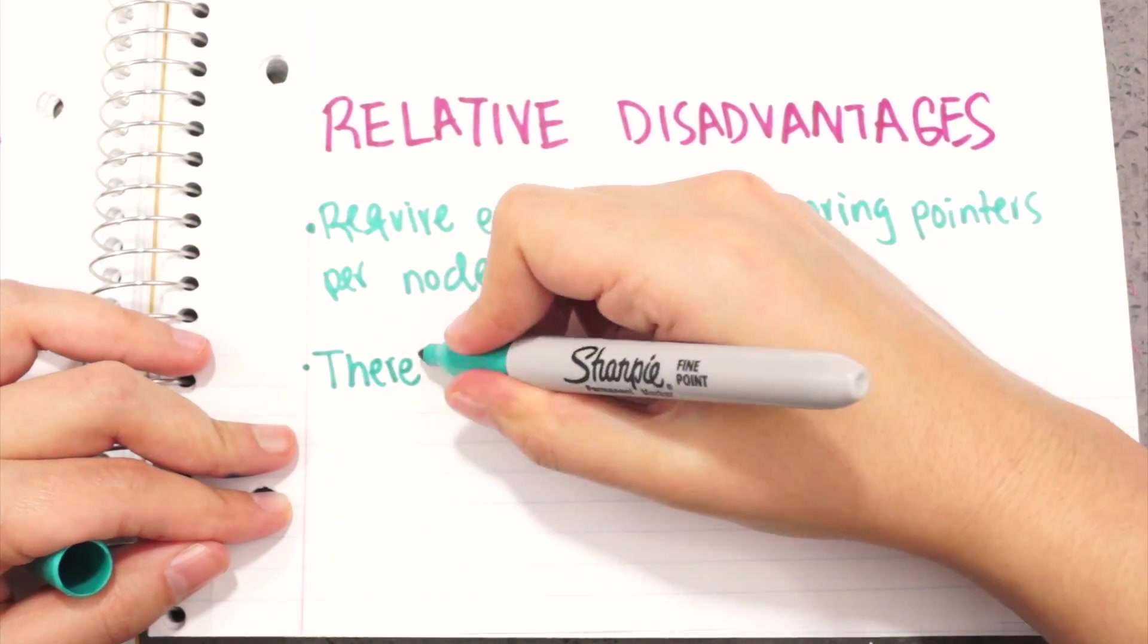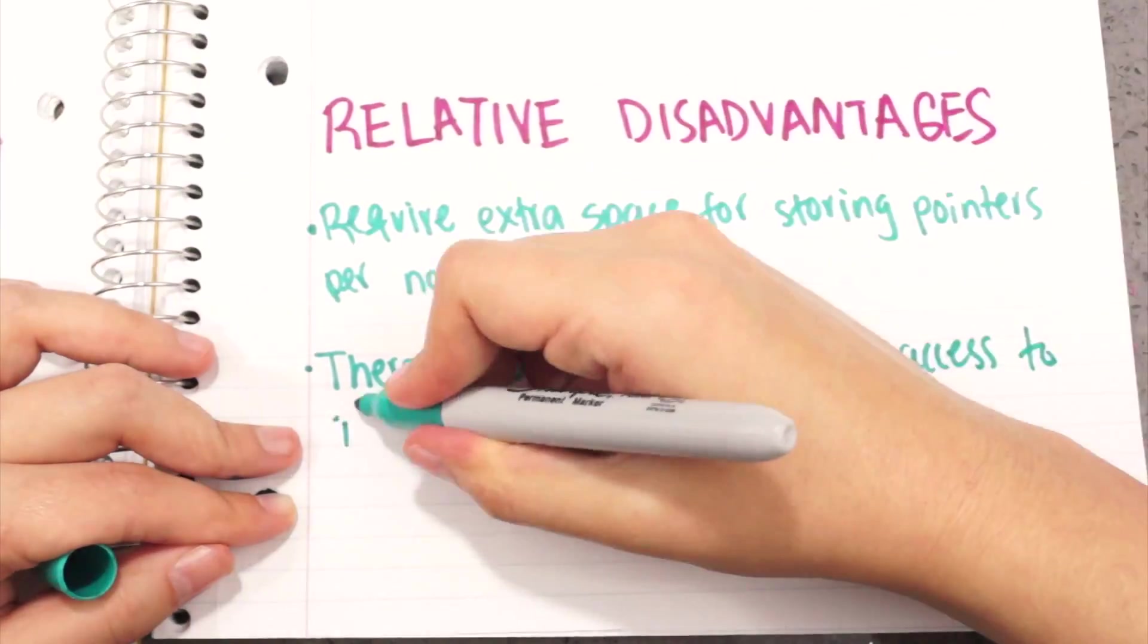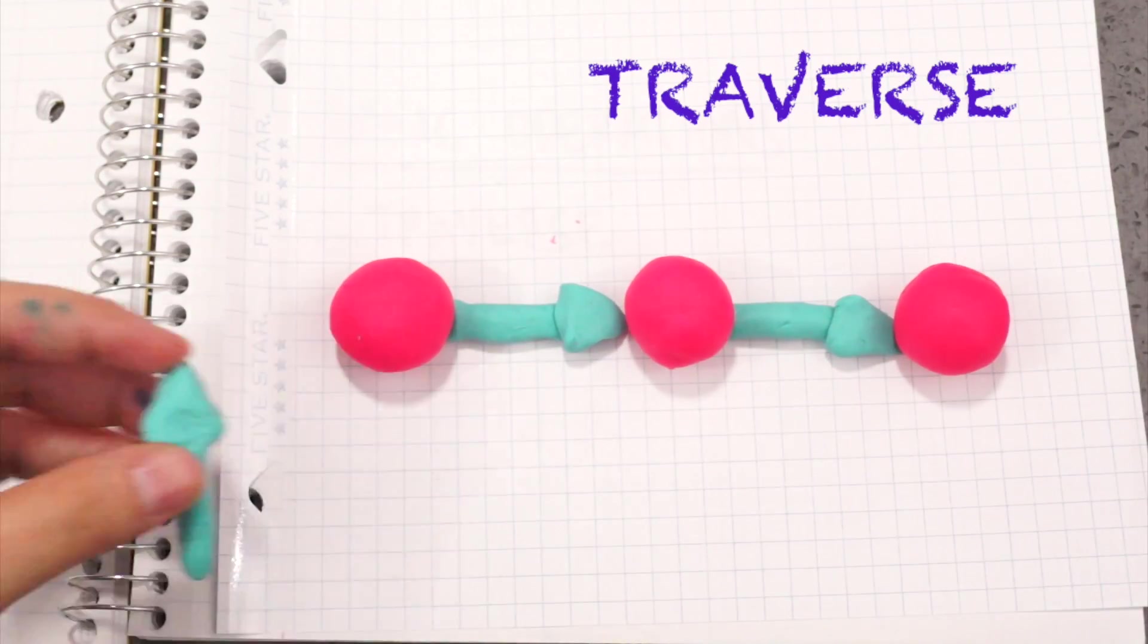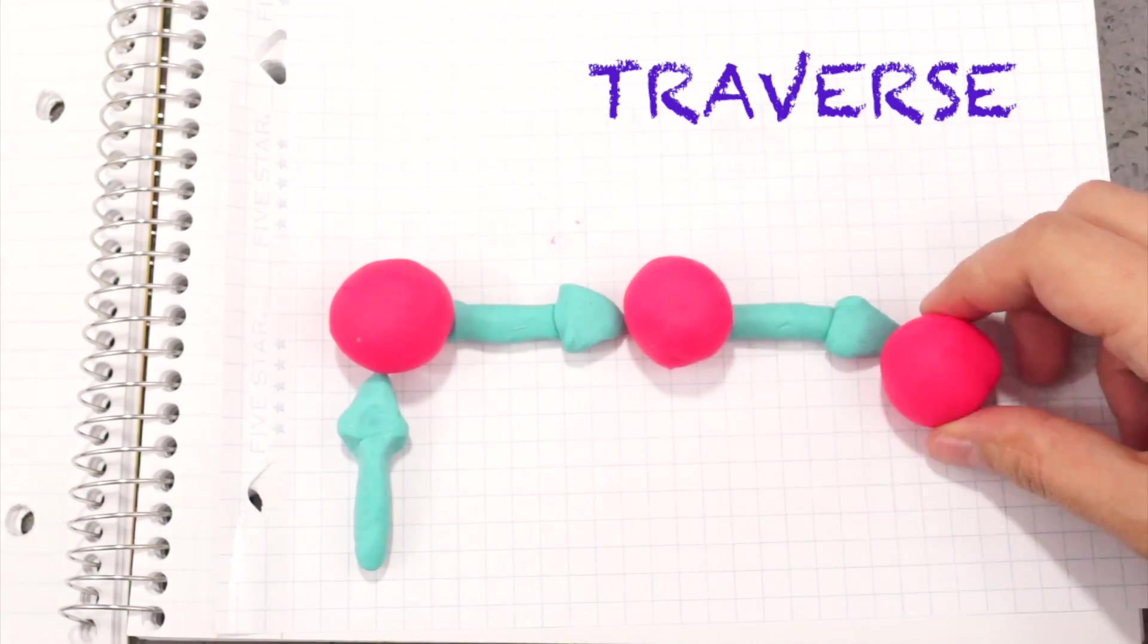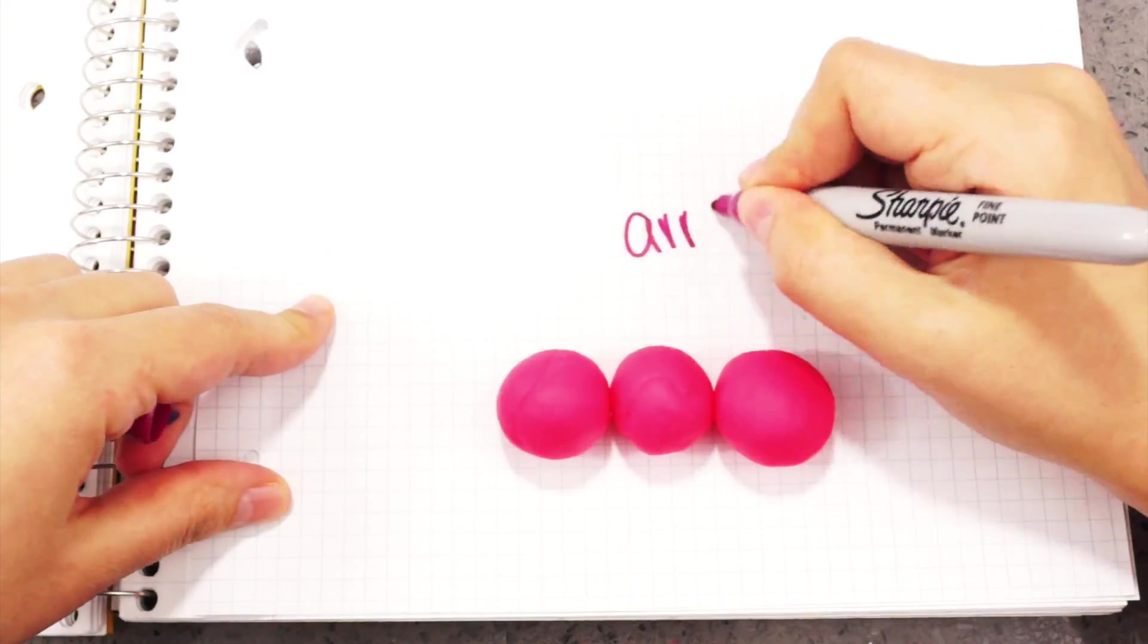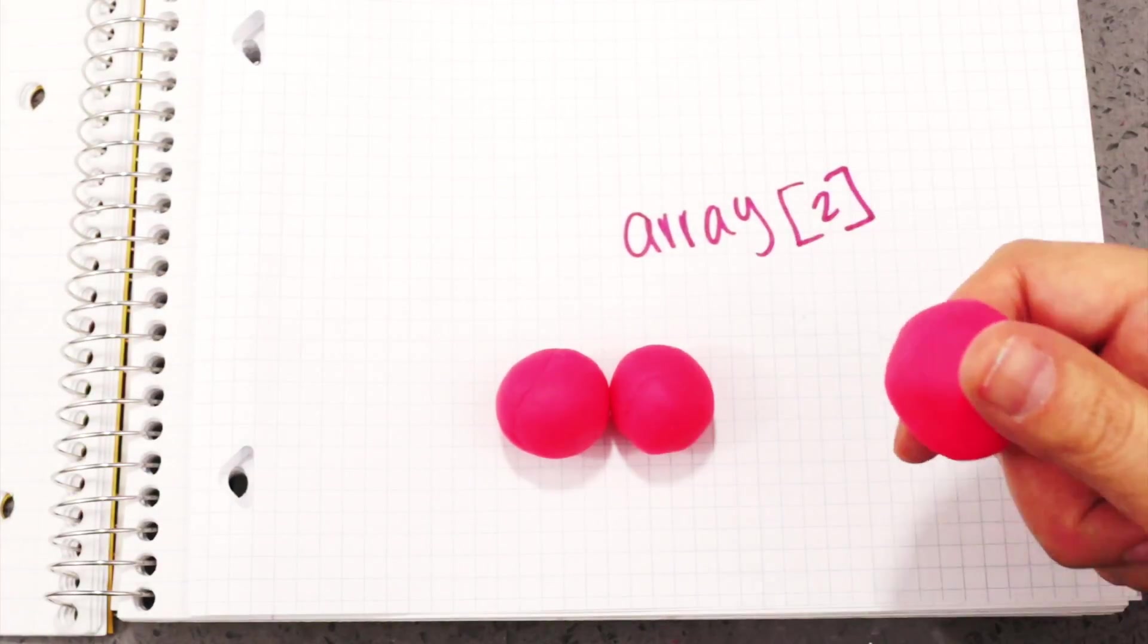Another relative disadvantage is that there is no efficient random access to items. In a linked list, to access an item, you need to traverse, which means you start at the head of the list and go through the entire list while doing some processing at each node. With arrays, all you need is an index to access an item.